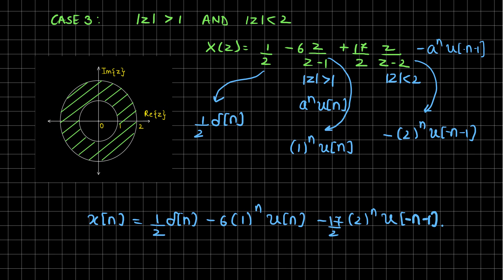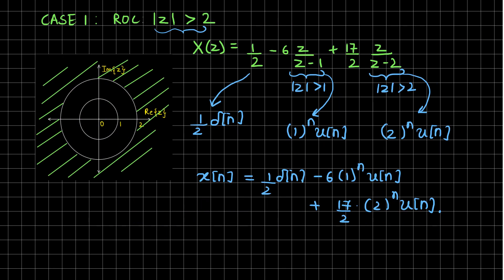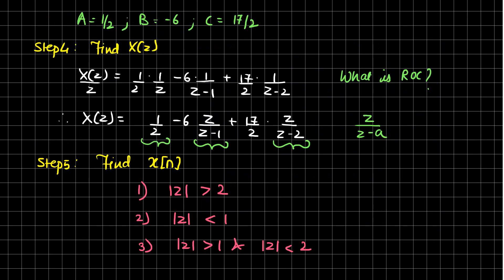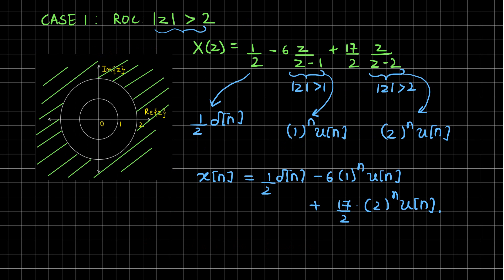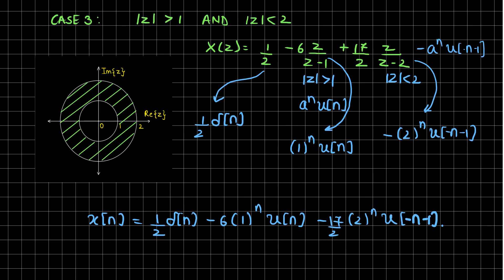In this lecture we have seen an example of how to find the inverse Z-transform using the partial fractions method. We have seen that in order to find the inverse Z-transform by observation, we need the region of convergence, and for various cases of region of convergence we get different equations in the time domain. Thank you.